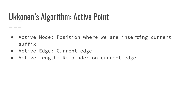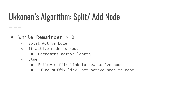Considering the active point triple: the active node is the position where we are currently inserting a suffix; the active edge is the current edge we're considering; and the active length is the remainder on the current edge. While the remainder is greater than zero, we're going to be splitting the active edge. If the active node is the root, we decrement the active length. If the active node is not the root, we will follow a suffix link to the new active node. If there's no suffix link, then we set the active node to root.